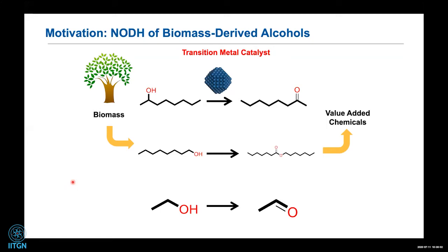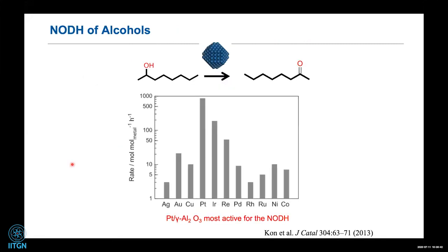Let me take an example: non-oxidative dehydrogenation of biomass-derived alcohols. From biomass you get different kinds of alcohol molecules. This is an industrially important reaction where you want to convert alcohols to aldehydes to get different functionality that can be converted into value-added chemicals. Whether primary or secondary alcohols, you convert them first into ketone or aldehyde functionality and then make value-added chemicals.